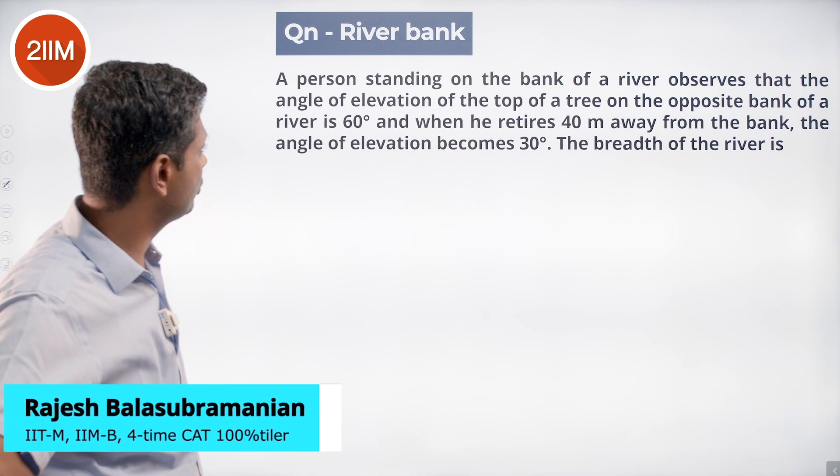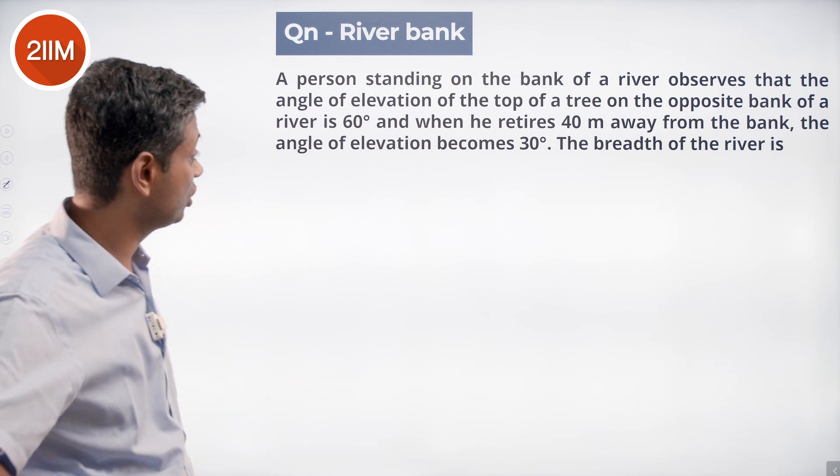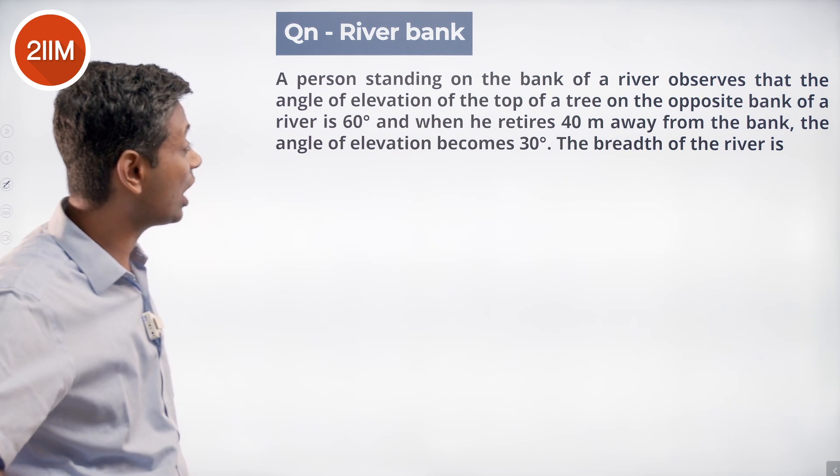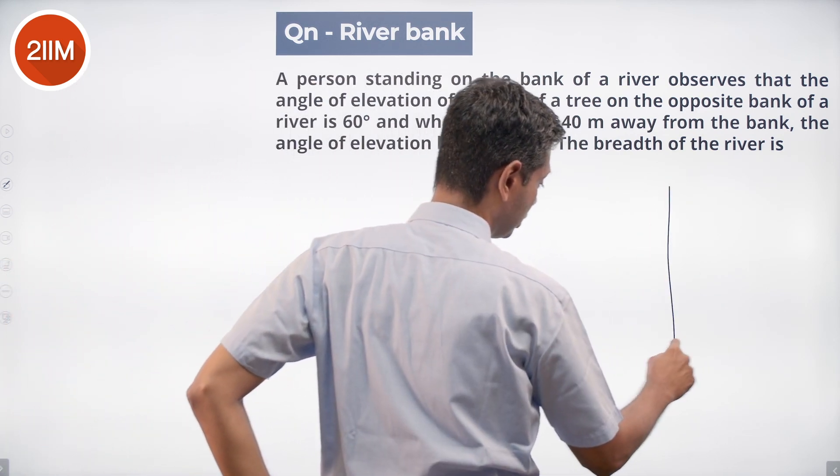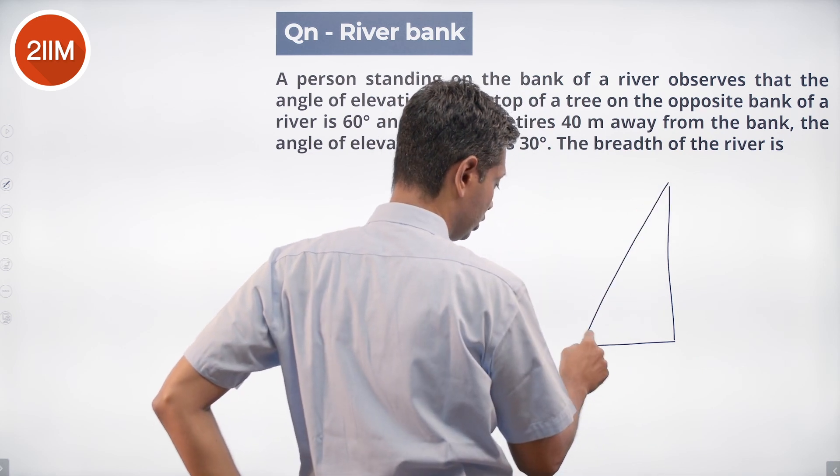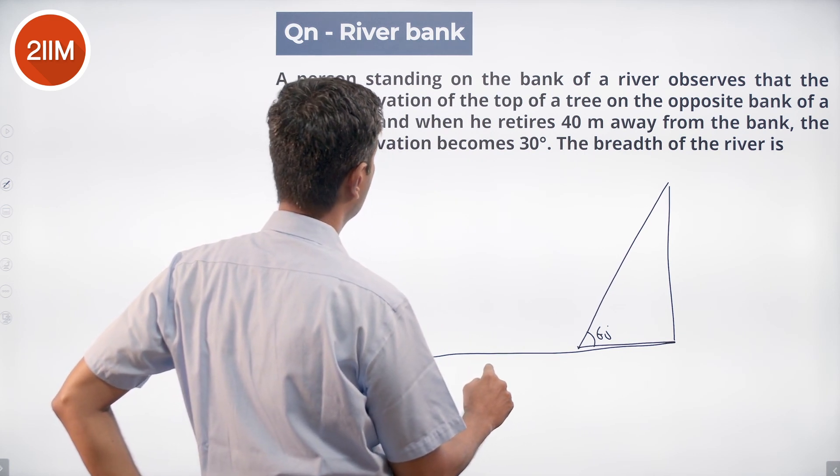A person standing at the bank of a river observes the angle of elevation to the top of a tree on the opposite bank is 60 degrees. When he retires 40 meters away from the bank, the angle of elevation becomes 30 degrees. There's a tree here, river here, this is 60 degrees, then he moves further away by 40 meters, this becomes 30 degrees.